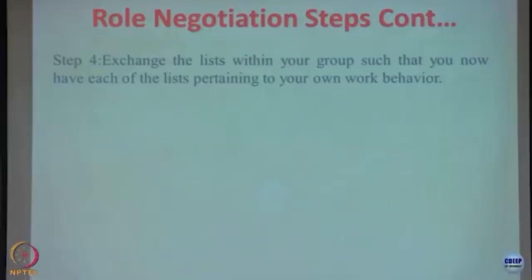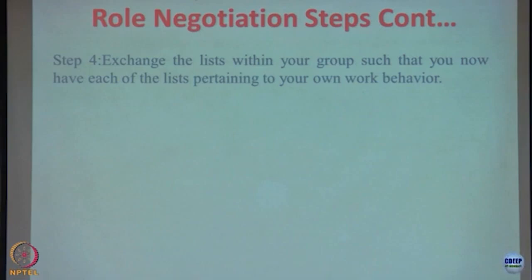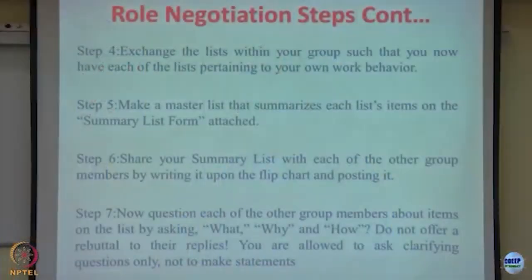After this, exchange lists within your group such that you now have each of the lists pertaining to your own work behavior. If there are 6 team members, all 6 make these 3 lists and exchange them with each other. I get the perception and contract offer from all other team members, and I extend my offer and contract request to all others. Based on all the data from different team members and what I have thought through, I make a summary list that includes what I am expected to do, what requests I have received, and what requests others are making to me.